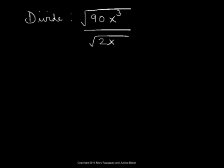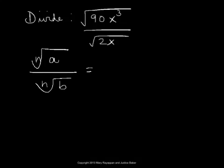Recall the rule that says nth root of a divided by nth root of b is same as nth root of a over b.